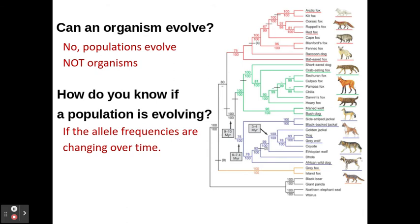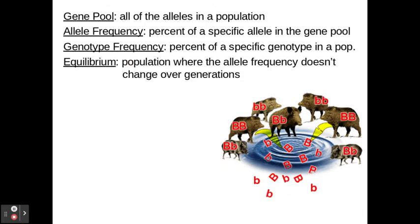How do you know if a population is evolving? You would have to determine that the allele frequencies are changing over time, and that is something you can calculate — something we're going to do today. Before we get into the calculations, let's make sure we know the vocab words. Gene pool is all of the alleles in a population — all the recessive and dominant alleles together.